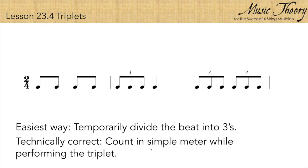The more technically correct way is to count in simple meter while performing the triplet. So we would count one and two and one and two and while performing this rhythm with our bow. This is harder than it looks.